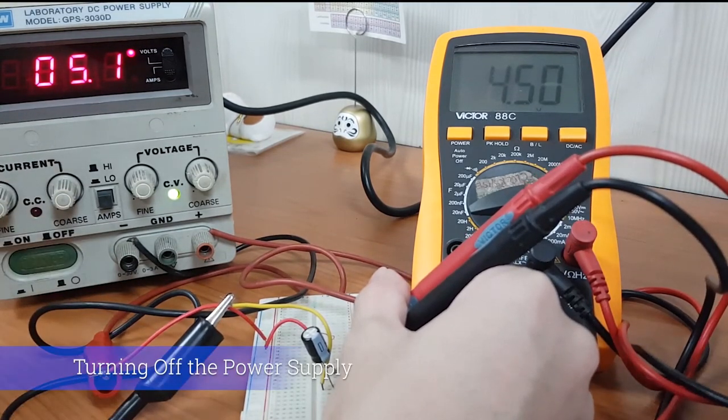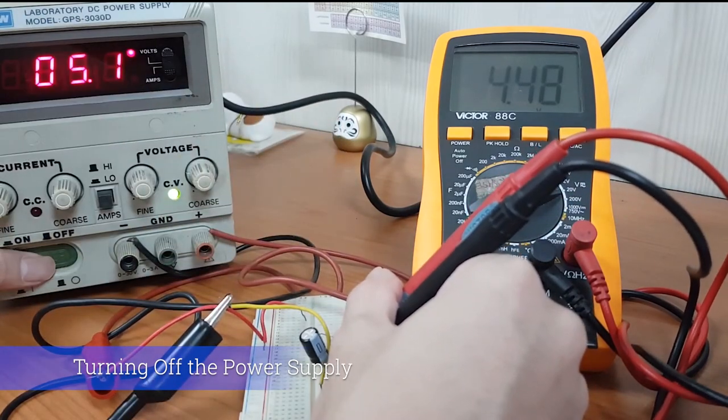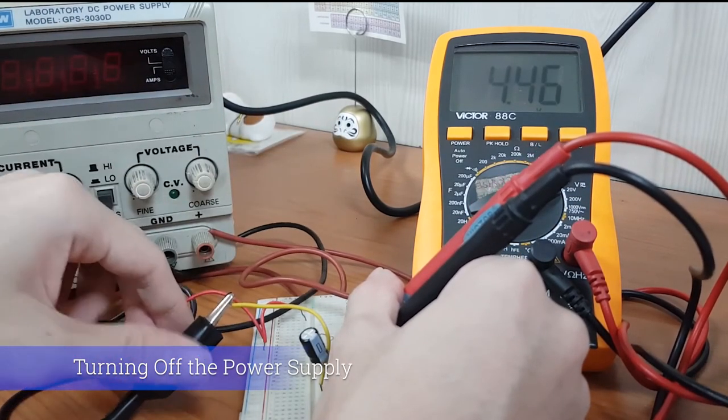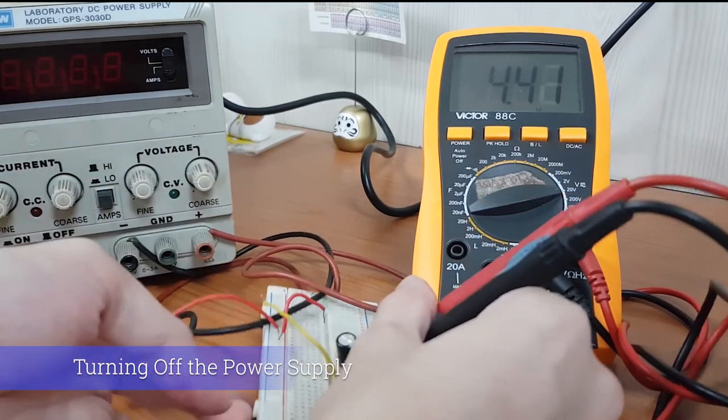For demonstration purposes, we will now turn off our DC power supply to observe the discharging mode of our RC circuit. We will remove the switch A and the power supply.